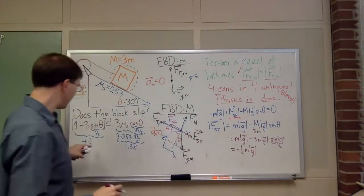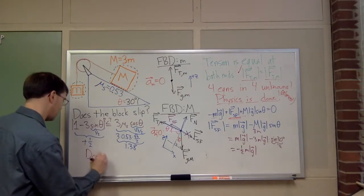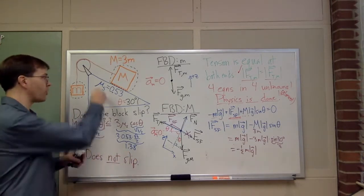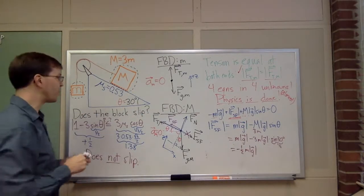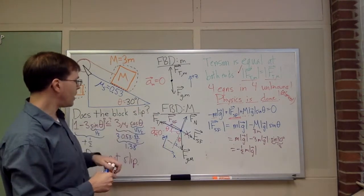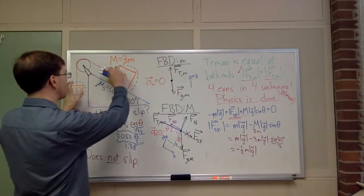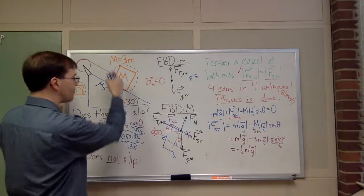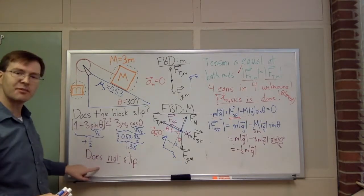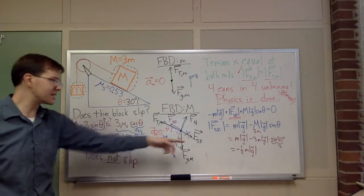So 1/2 is less than 1.38. It does not slip. If it were going to slip — say if I poured oil on the surface to eliminate friction — the negative sign tells me the friction was acting up the slope, meaning the block would have been trying to slide down the slope, with the little mass sliding up. That's how I interpret the negative sign.